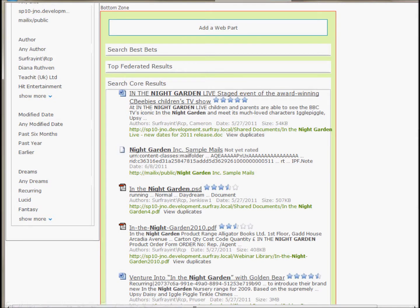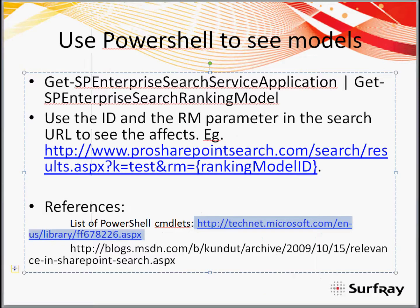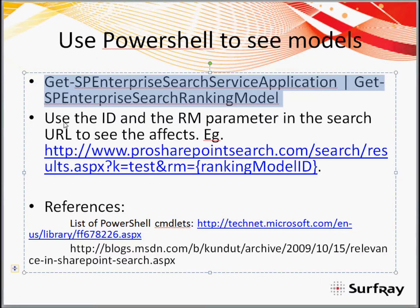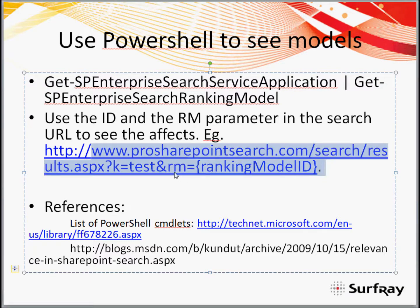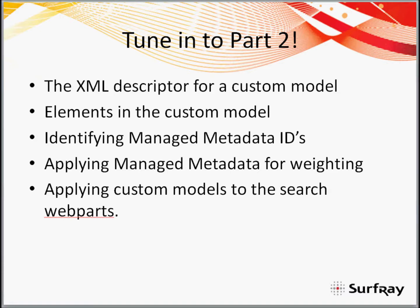That's pretty much what I wanted to show you today for the ranking algorithm. This is the PowerShell command you need to get those custom ranking model IDs back, and if you want to put the ranking model into the URL, use the RM parameter. In part two, I will look at the XML descriptor for the custom model, how to upload those custom models, which elements are in them, how to identify managed metadata IDs in SharePoint — because you need managed metadata to change the weighting if you're relying on a managed metadata value or custom column property to add weight — and how to apply those to web parts.